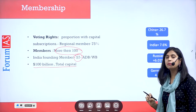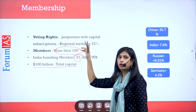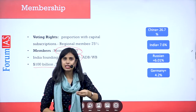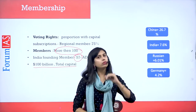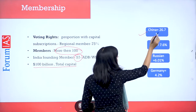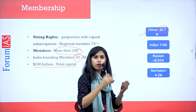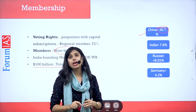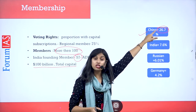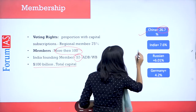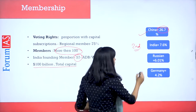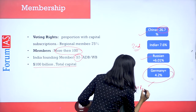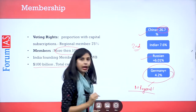Regarding governance and voting rights, each member's voting right is proportional to their contribution to the 100 billion dollar capital. China has the largest contribution at 26.7% — similar to how the US dominates in the World Bank, China dominates in AIIB. So rather than breaking Western hegemony, China has effectively become a hegemon here. India comes second with a share of 7.6%, followed by Russia at 6.01% and Germany at 4.2%. This shows that regional members exercise significant influence, but non-regional members also have notable influence.